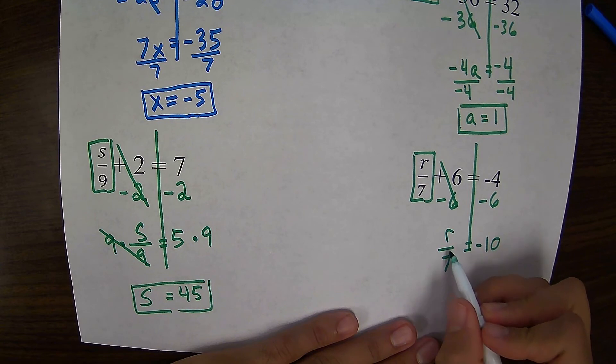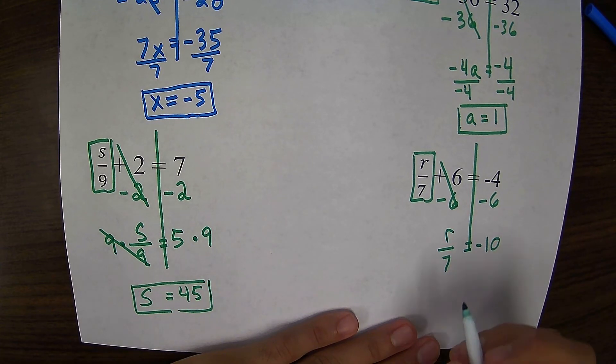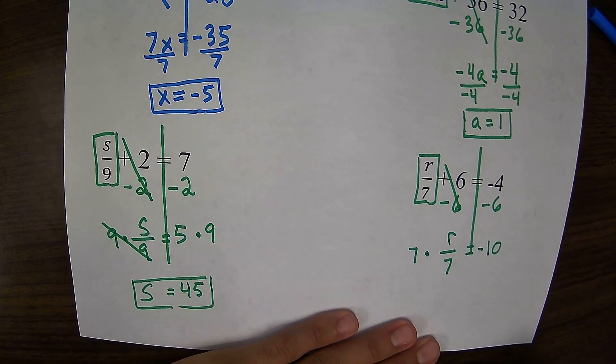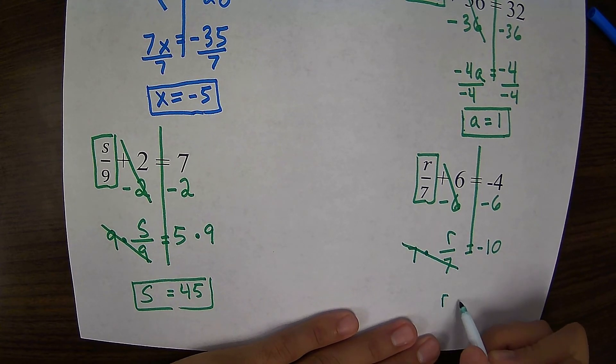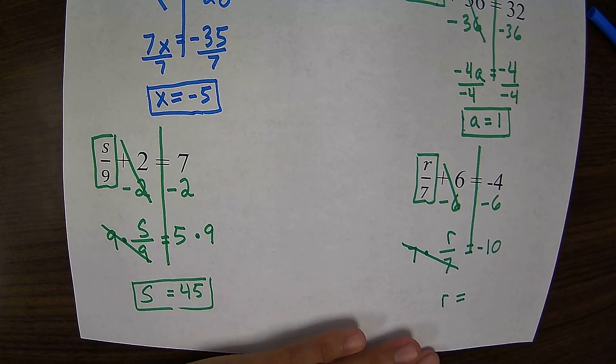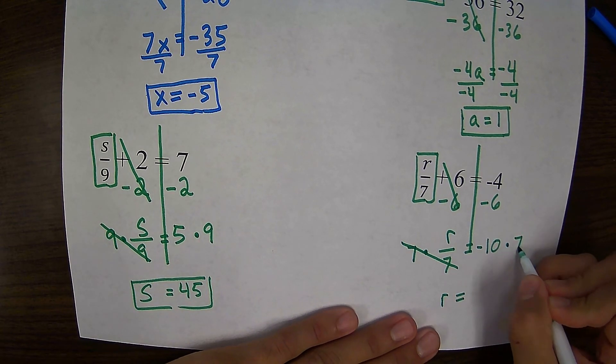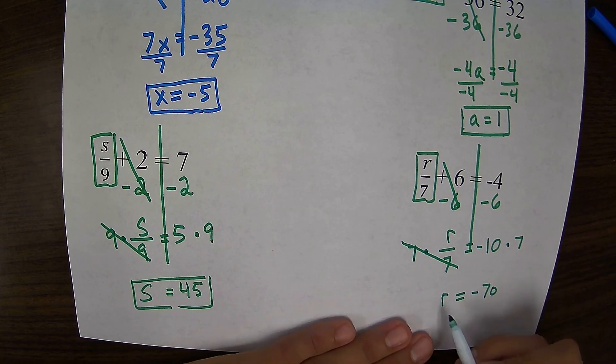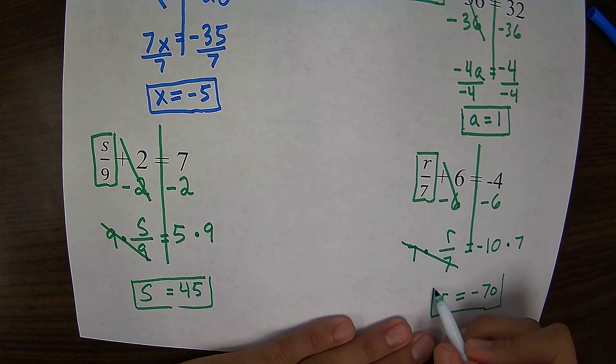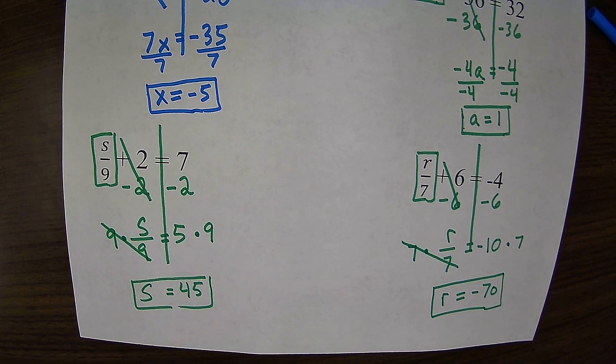Now here, since r is being divided by 7, to get r by itself, I need to do the opposite. I need to multiply by 7. 7 times r divided by 7 will just give me r. I'll do that on the other side as well. Negative 10 times 7 gives me negative 70. r equals negative 70.